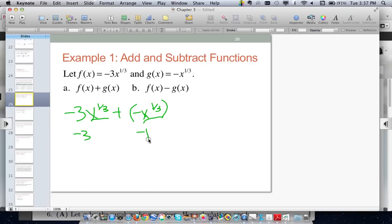So just add those together, and we get negative 4 times x to the 1/3. So that is what h of x, our new function, is going to be equal to.